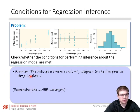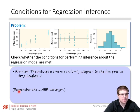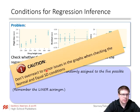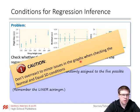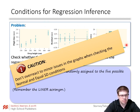For the random condition: the helicopters were randomly assigned to the five possible drop heights. Remember the LINEAR acronym and don't overreact to minor issues in the graphs when checking the normal and equal standard deviation conditions. If things are a little bit off, we're just looking for major skew or major spread issues — if the residuals got a little bigger but it's not dramatic, that's fine.